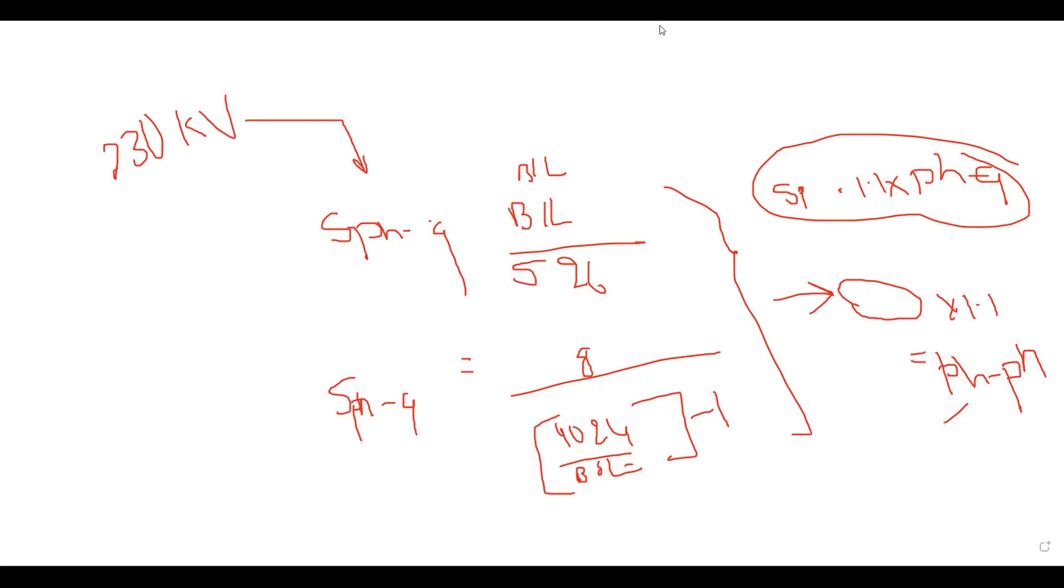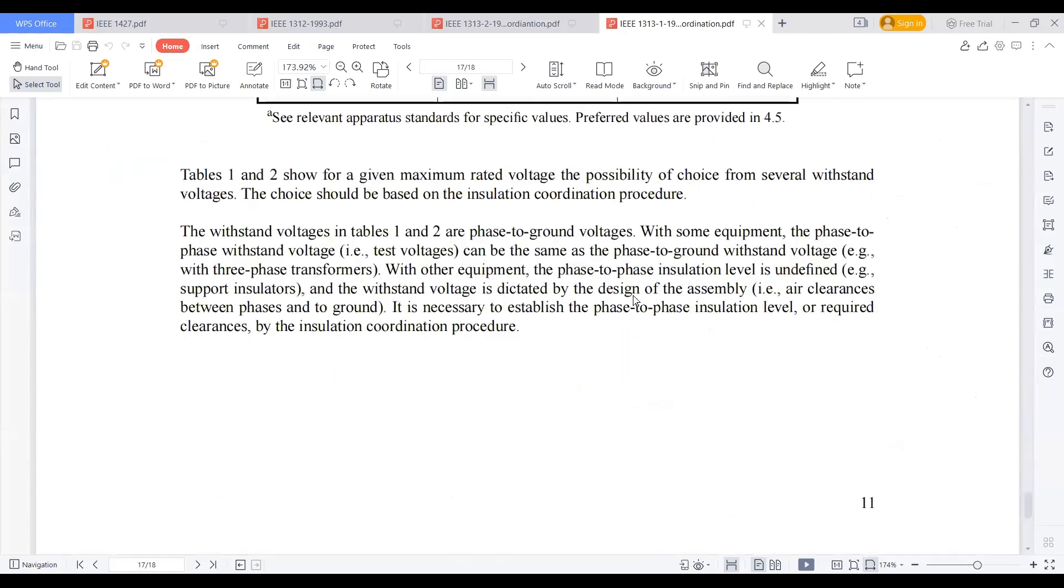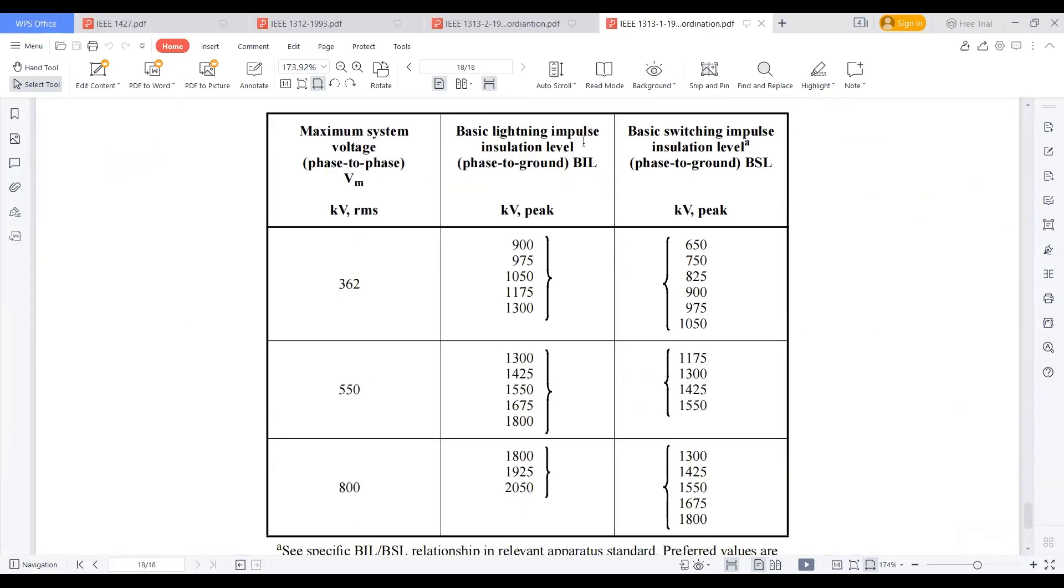For 220 kV, we will generally go for 1050. And for the 400 kV system, we will generally go with samples for BIL and BSL levels like 1550, 1550 and here 1800 or 1675 like that.